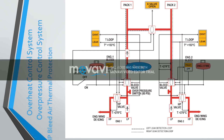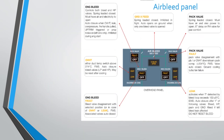HP Bleed Air Thermal Protection: When the thermal sensor detects a temperature greater than 270 degrees Celsius on the HP port, the HP bleed valve is closed and any MFC bite-loaded magnetic indicator turns amber.